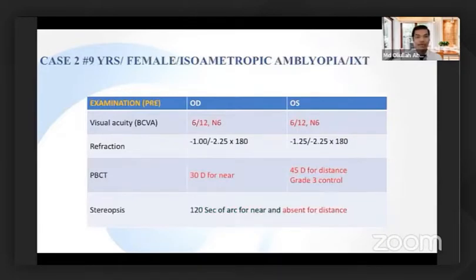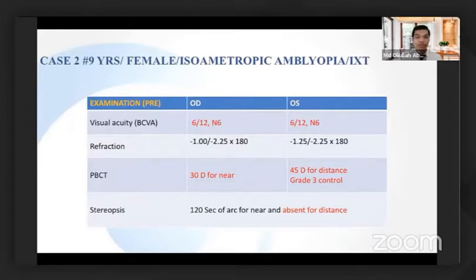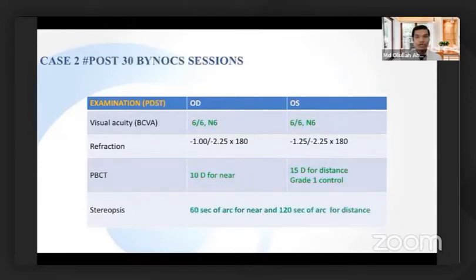The next group of patients is also very common — isometric amblyopia. Most of the time, these patients also present with near and distance intermittent strabismus. In this case, the patient presented with 30 diopters intermittent exotropia for near and 25 diopters exotropia for distance, with very poor control. The stereopsis for near and distance were also affected. After 30 sessions, this patient not only gained monocular acuity but also improved binocular function. Intermittent exotropia control was very good, near stereopsis improved to 60 seconds of arc, and distance stereopsis to 120 seconds of arc with random dot stereogram.